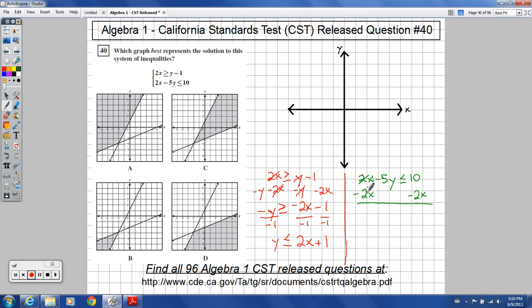And that will cancel out there and there. So I got that to cancel. I've got negative 5y here. I've got less than or equal to negative 2x plus 10 on the right side.